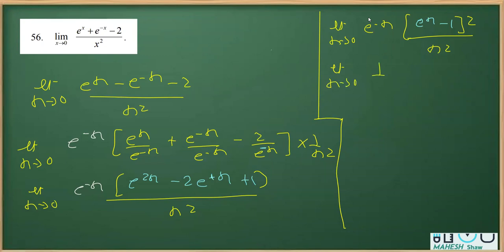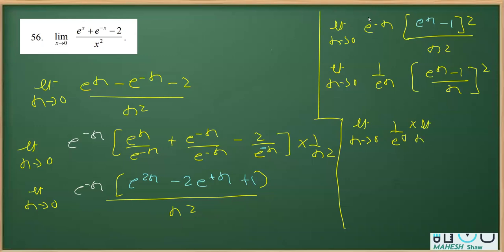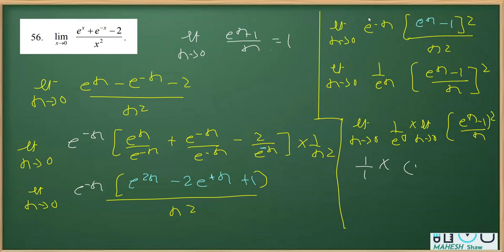I can rewrite this as 1 over e raised to the power x, multiplied by [(e raised to the power x minus 1) over x] whole squared. Now applying limits: the first part gives 1 over e raised to the power 0, which is 1 over 1 = 1. Using the standard relation, limit x tends to 0 of (e raised to the power x minus 1) over x = 1, so the second part gives 1 squared = 1. Therefore the answer is 1 × 1 = 1.